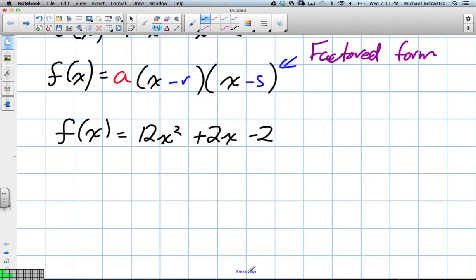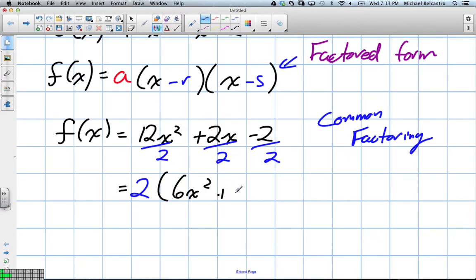The very first step to factoring is common factoring. Okay. So we've got to look for a common factor. Well, it just so happens 2 is a common factor here. I can divide every term in here by 2 to simplify it a little. Now the 2 doesn't disappear. It kind of comes to the front. And in brackets, we leave what would be left. So in this case, we'd have 6x² plus x minus 1. Okay. So that's the common factor.